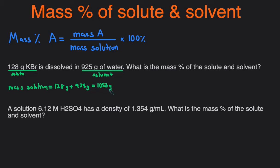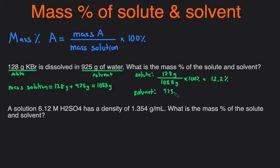That gives us 1053 grams. Now that we have the mass of the solute, mass of solvent, and mass of solution, we can plug into the equation. The mass percent of the solute is 128 grams divided by 1053 grams times 100%, which gives us 12.2%. For the solvent, it's 925 grams divided by 1053 grams times 100%, which gives us 87.8%. We can double-check that this is correct because the sum of the total percentages equals 100%.